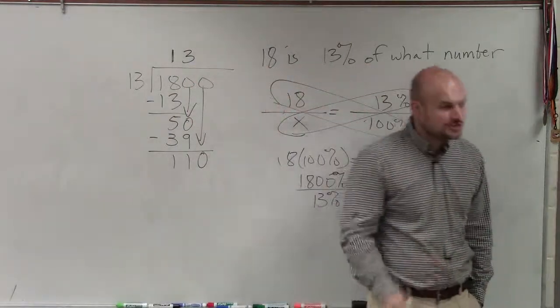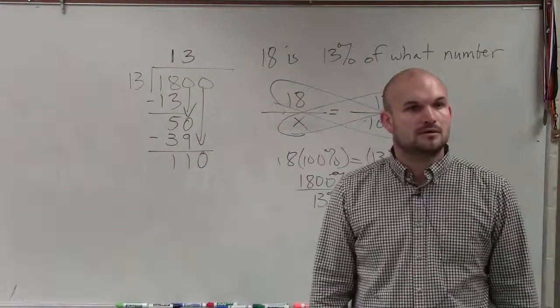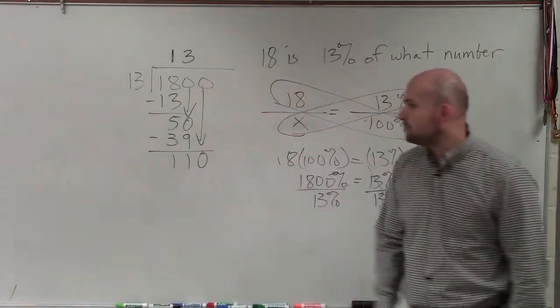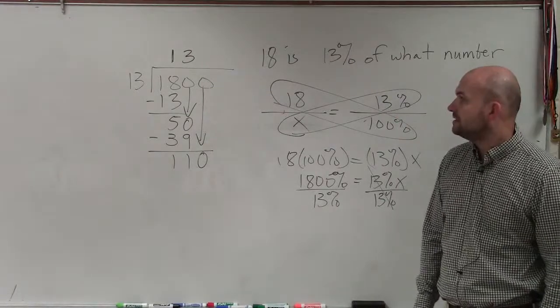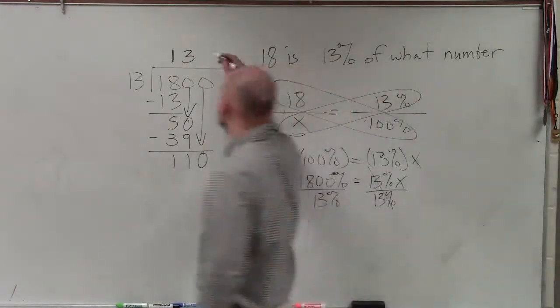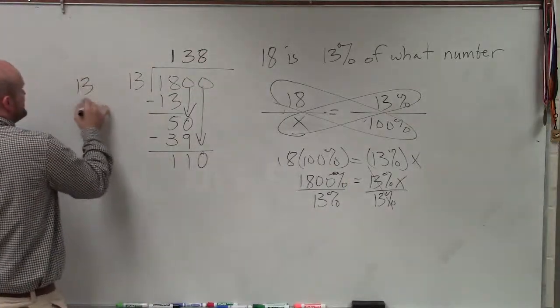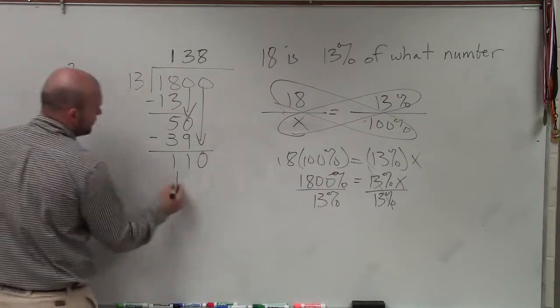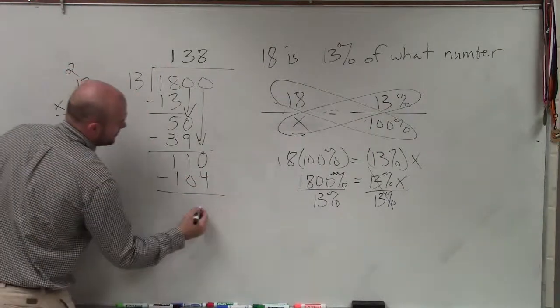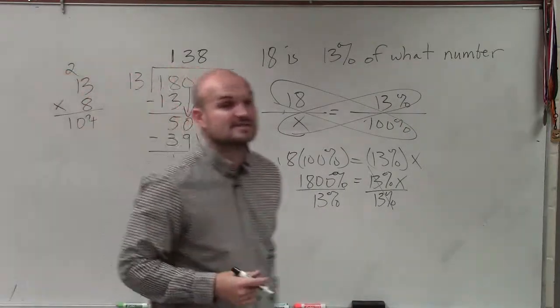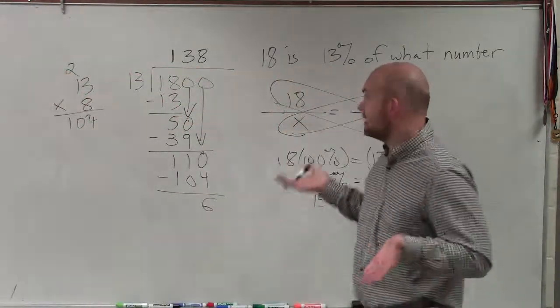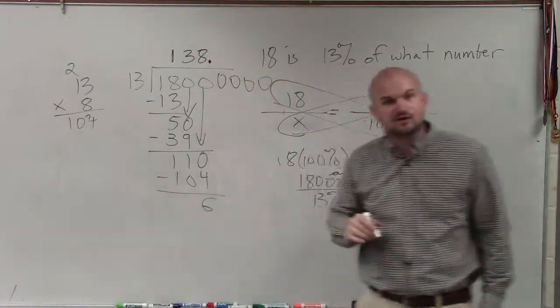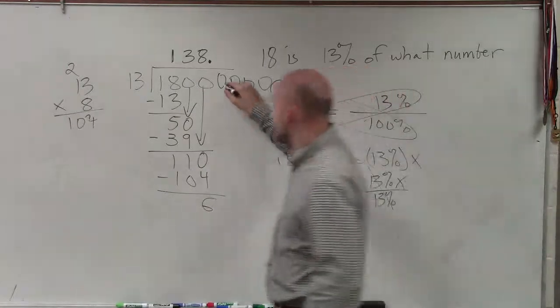13 does not go into 11, so I bring down the next 0. Now how many times does 13 go into 110? 8. Not until I'm done. 8. 8 would be 104. So it goes in there 8 times. 8 times 13, in case you're not following along, 24, 104. So 104. Then I subtract these two, and I get 6. 13 does not go into 6. And I ran out of 0's. So when I run out of 0's, I put the decimal point. And then that gives me a bank of as many 0's as I want to do. So now I bring down a 0.